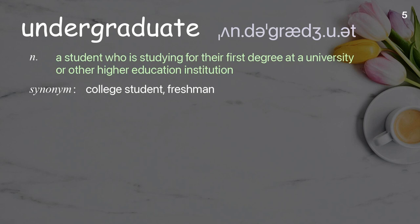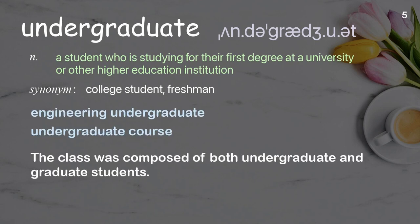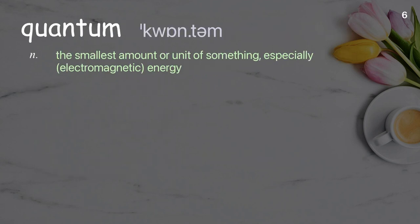Undergraduate. A student who is studying for their first degree at a university or other higher education institution. Examples: the class was composed of both undergraduate and graduate students.